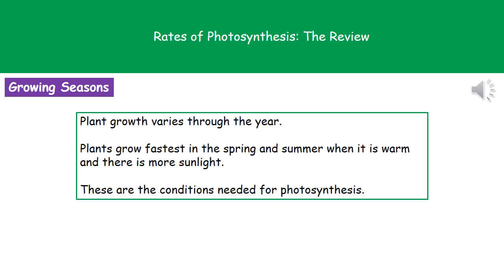Welcome to our review on the rates of photosynthesis. The first thing we need to consider is that plant growth is not occurring at one constant rate throughout the whole year — it varies at different stages. Plants grow their fastest in the spring and summer when it's nice and warm and there's more sunlight available, because those are the conditions needed for photosynthesis.